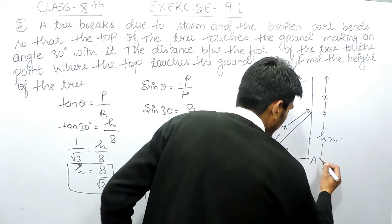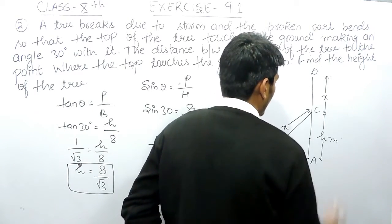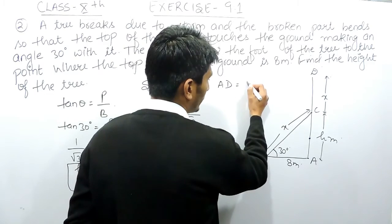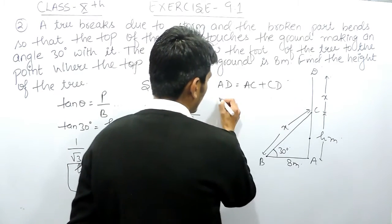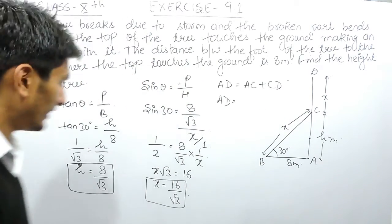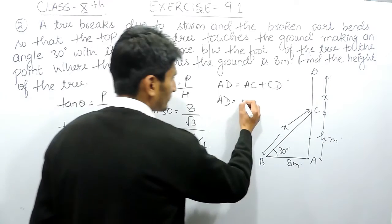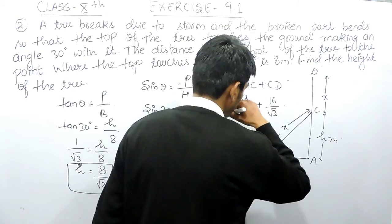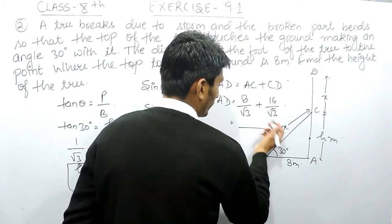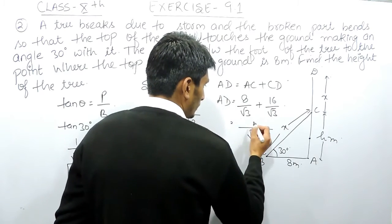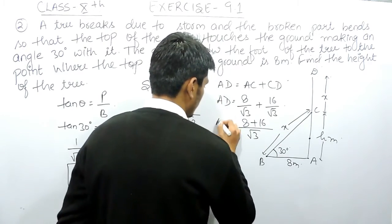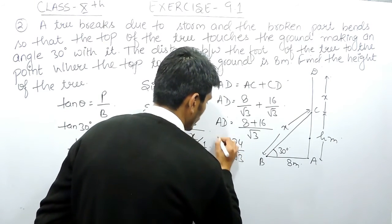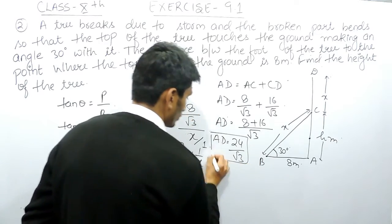Naming the triangle: points a, b, c, and d. The height of the tree is AD, which equals AC plus CD. AC is h = 8/√3, and CD is x = 16/√3. Taking the LCM — since the denominators are the same — this becomes (8 + 16)/√3 = 24/√3.